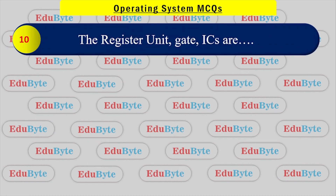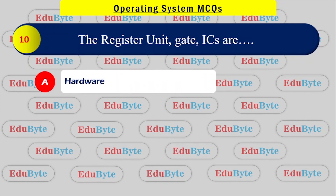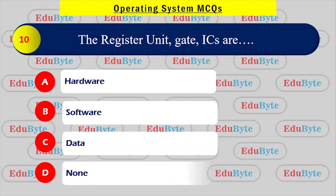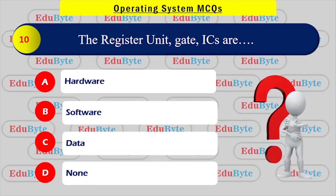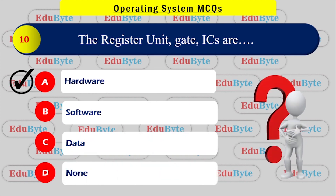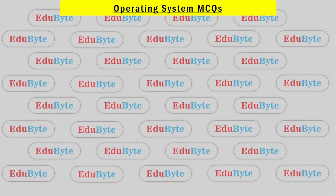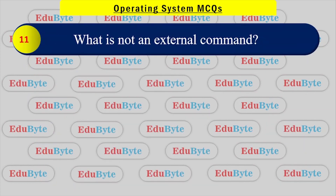Registers and ICs are part of which category? Options: hardware, software, data, none of the above. The correct answer is hardware. Registers and ICs are physical chips, so they are hardware components.